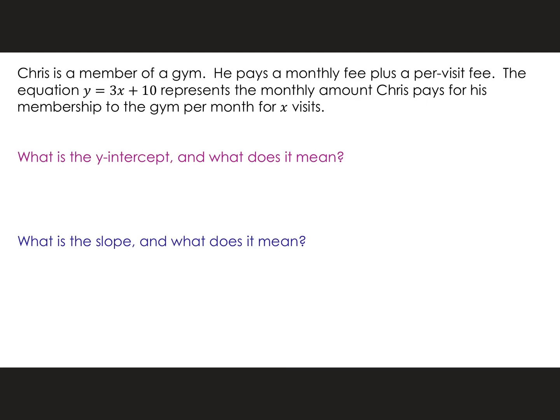Chris is a member of a gym. He pays a monthly fee plus a per-visit fee. The equation y equals 3x plus 10 represents the monthly amount Chris pays for his gym membership for x visits. What is the y-intercept? Just look at the equation — it's the number being added or subtracted to your x term, which is 10. What's your slope? That'd be the 3 that's multiplying your x. But what do they mean?